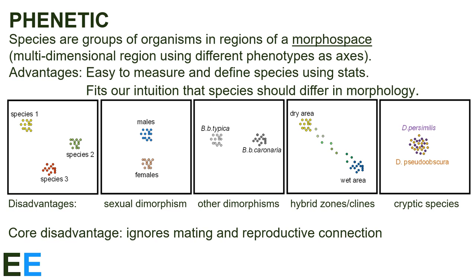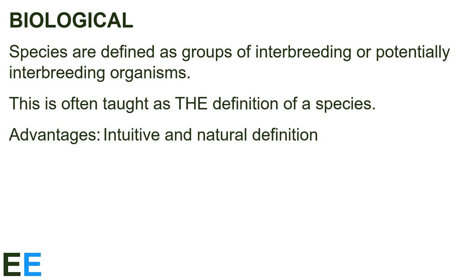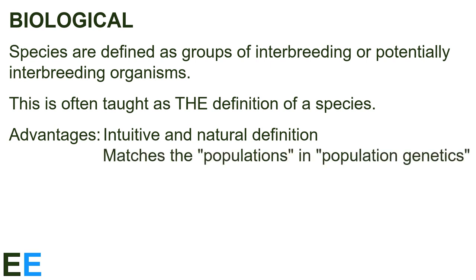Males and females, and black and white peppered moths, are clearly the same species because they freely mate with one another. On the other hand, we would consider Drosophila prosimilis and Drosophila pseudoobscura to be distinct species because there's virtually no interbreeding between them. The importance of interbreeding leads us to our fourth species definition, the biological species concept. According to this definition, species are defined as groups of interbreeding or potentially interbreeding organisms. This is often taught as THE definition of a species, but that's not strictly true, as we've seen. The main advantage of this definition is that it's an intuitive and natural definition. Another advantage is that species defined this way match the populations in population genetics, an important part of evolutionary biology and genetics.